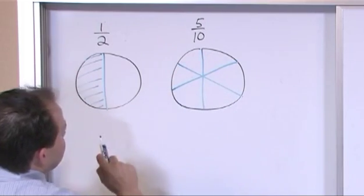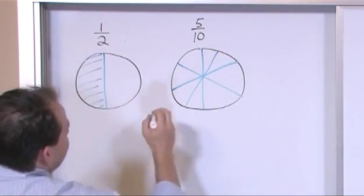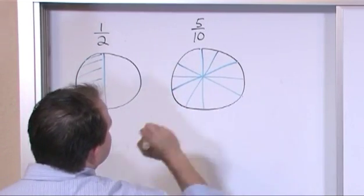One, two, three, four, five, six. Well, I'm going to cut it in half again. It's going to give me eight pieces. That's seven, eight. And I'm going to cut it in half again, nine, ten.